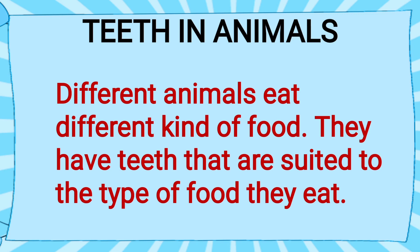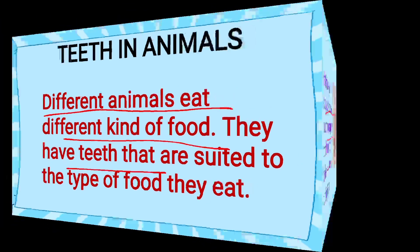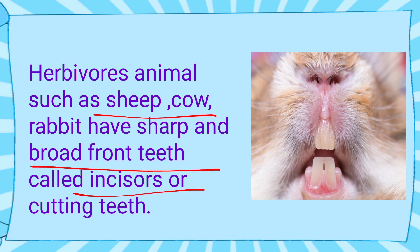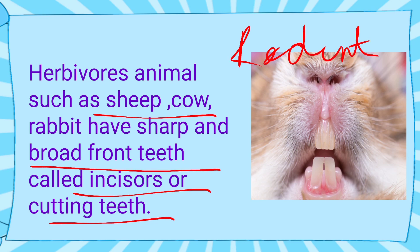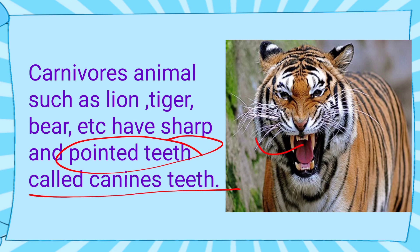Teeth in animals: Different animals eat different kinds of food, and on that basis they all have different kinds of teeth. Herbivorous animals such as sheep, cow, and rabbit have sharp and broad front teeth called incisors or cutting teeth. Rabbits and rats are also known as rodents. Carnivorous animals such as lion, tiger, and bear have sharp and pointed teeth called canine teeth, which are used for tearing flesh, as you can see in the picture.